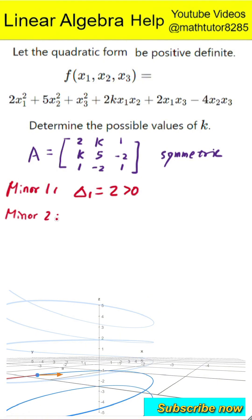Next, we compute the 2x2 leading principal minor formed by the top left two rows and columns. The determinant is 2 times 5 minus k squared, which simplifies to 10 minus k squared.